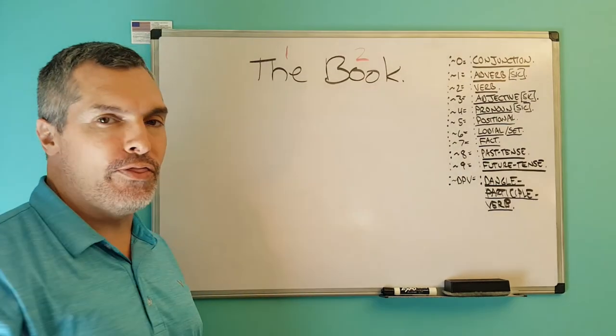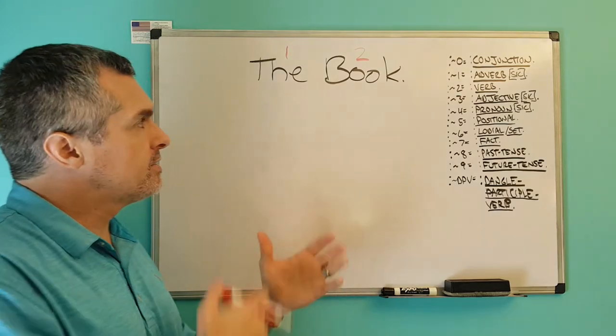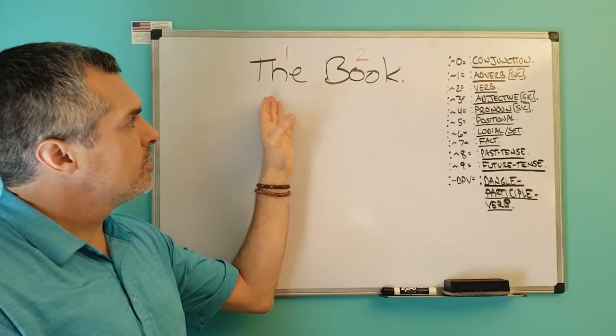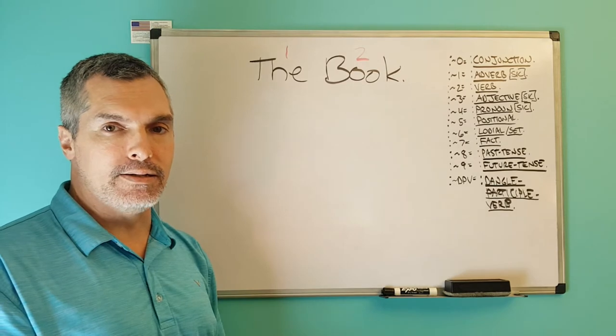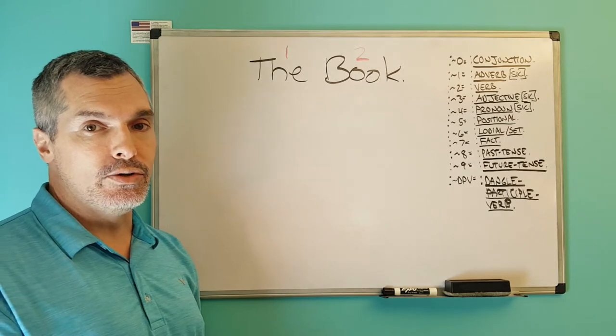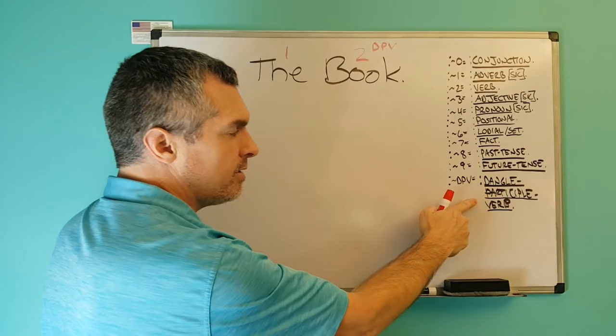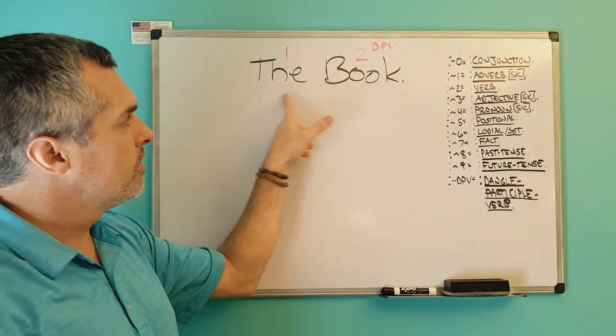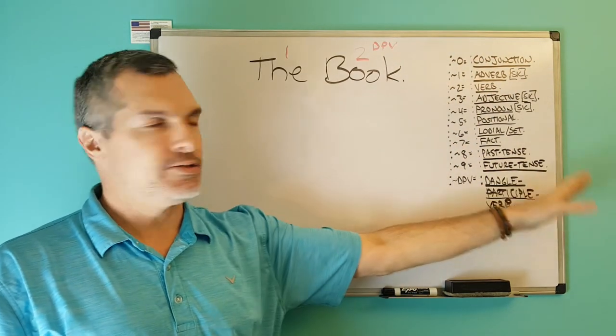Because a verb cannot stand by itself if there's nothing to think about. So it's movement, an adverb verb movement in the reader's mind. That is how book is modified into a verb, not only a verb, but a dangling participle verb. Meaning we have thinking here, the thinking, but there's nothing to think about, so it's just dangling there.